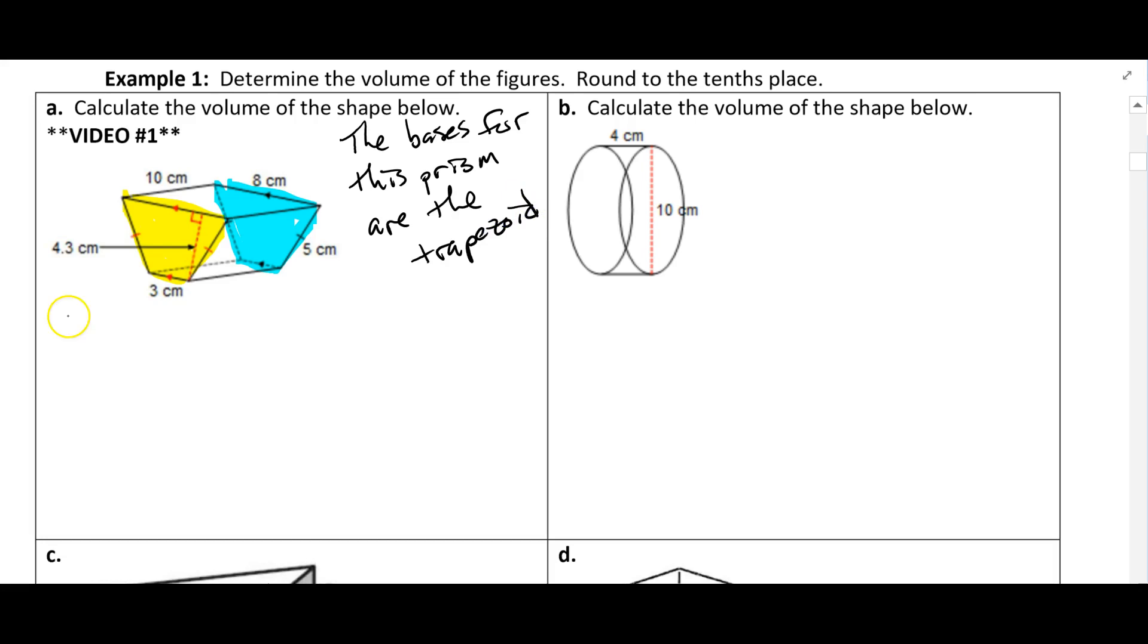So we know that the volume of a prism is area of the base times the height. And since the bases are trapezoids, the B here is going to be the formula for the area of a trapezoid. So that's going to be B1 plus B2 divided by 2 times little h. Let's go ahead and substitute that in.